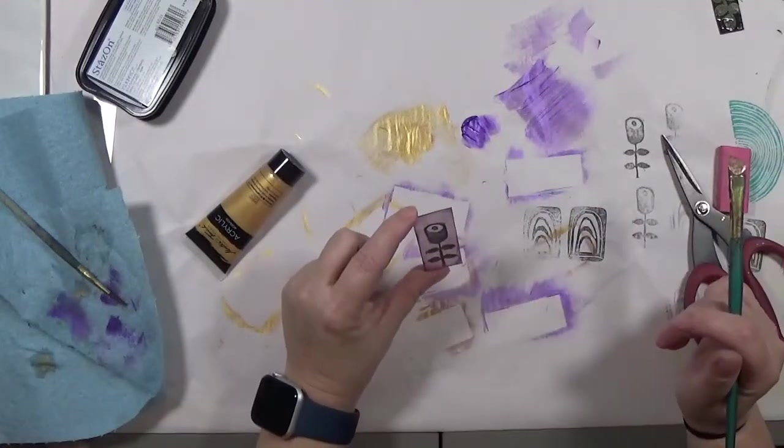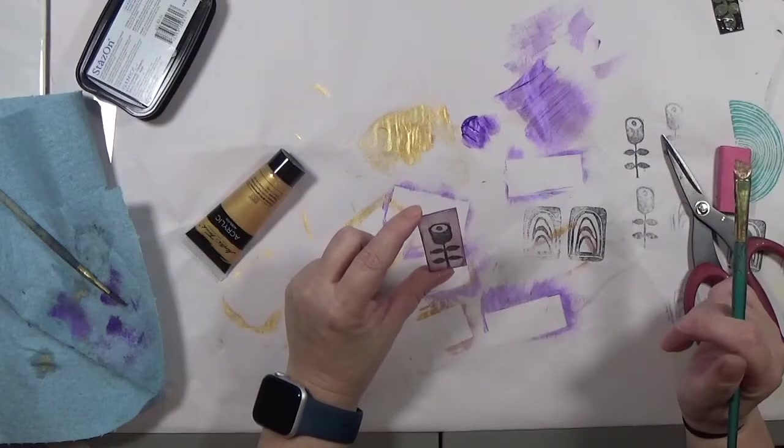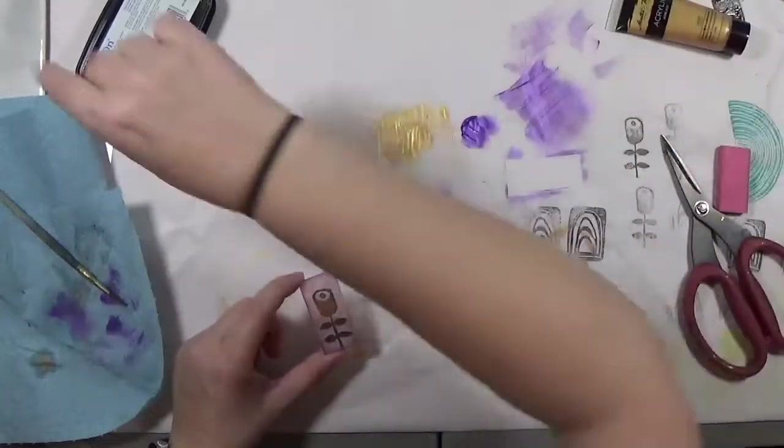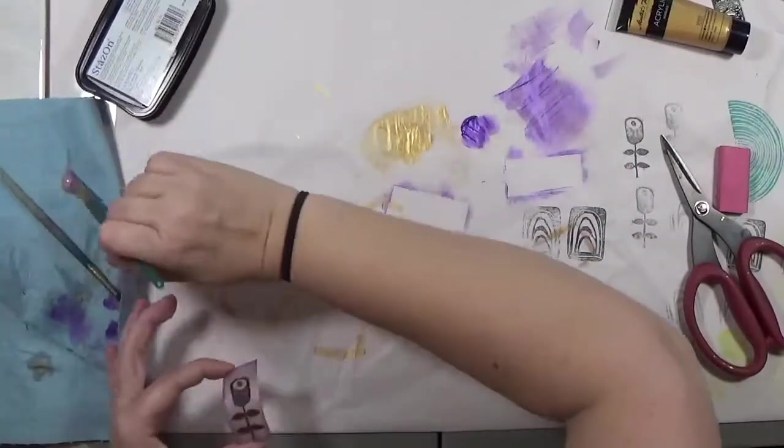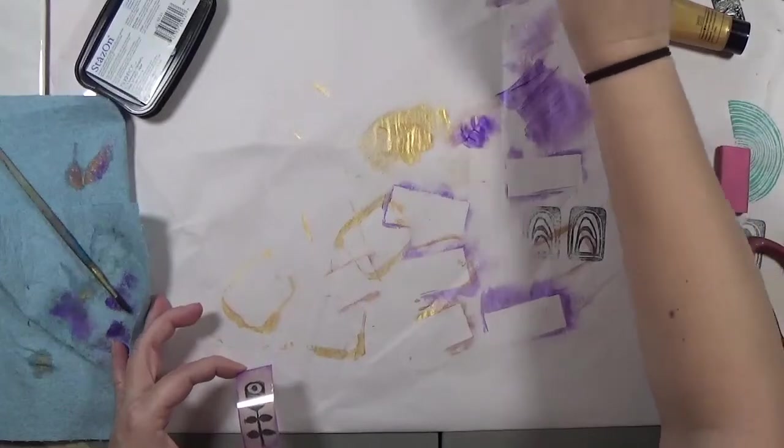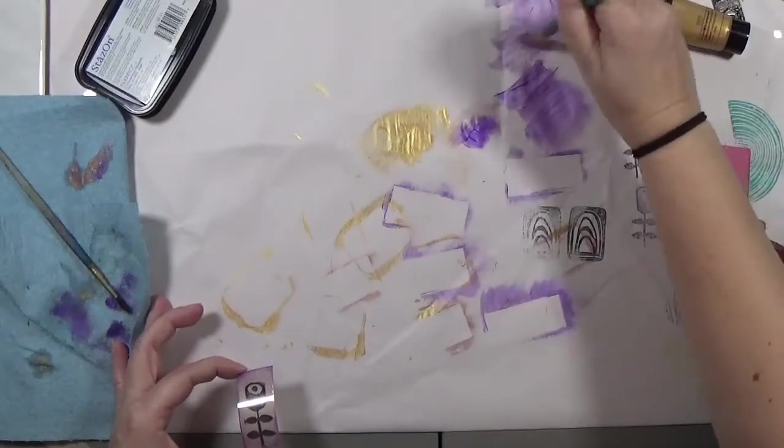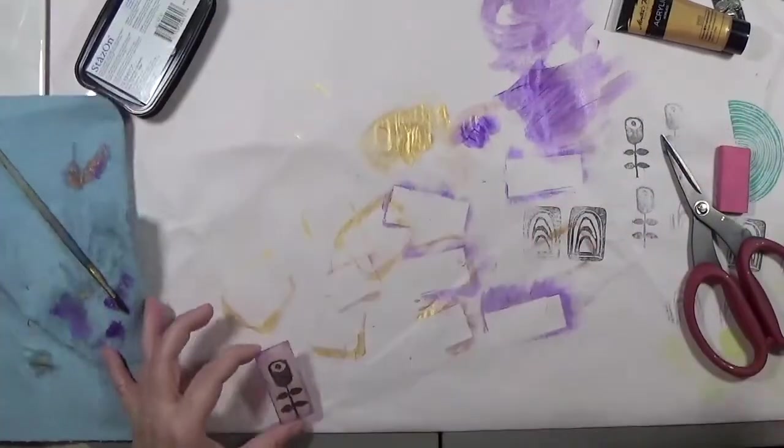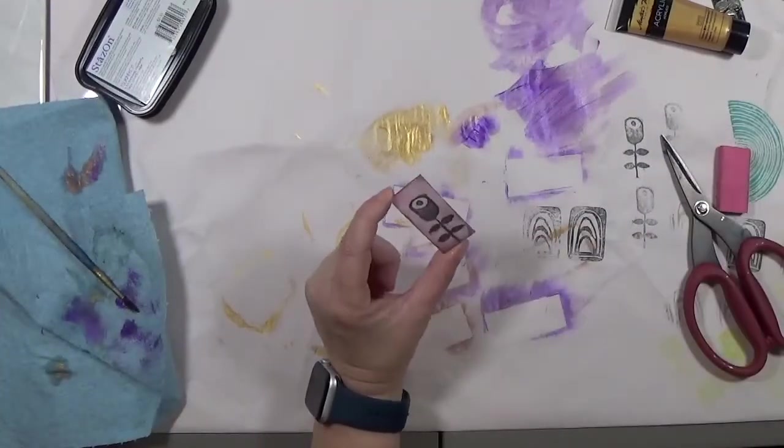And I'm using stamps here. Like I said, you could draw on this or use colored pencils. They even have some that you can put through your printer and print out things and shrink them. So this is just what I decided to do. Since that theme, like I said the Ugly Art Club theme is Stamp It, immediately I was like I'm gonna make some charms.